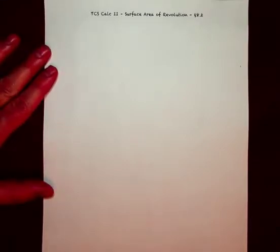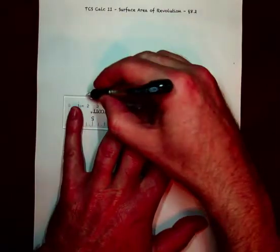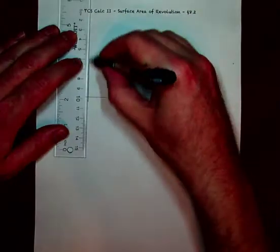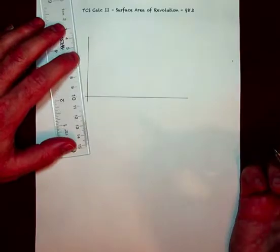My people, I hope we're doing well. We're going to do a video on the surface area of revolution. It's related to the arc length, and the reason is that what we're going to be doing is, for each one of those subdivisions, we're going to be taking those infinitesimally short secant line segments and revolving them in order to create a surface.